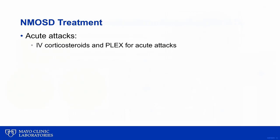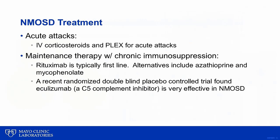Because the attacks are severe, early plasma exchange therapy is often used in addition to IV steroids for acute attacks. These patients need to be on chronic, lifelong immunotherapy to prevent relapse, with rituximab typically being the first-line agent. A recent randomized double-blinded placebo-controlled trial showed eculizumab, a C5 complement inhibitor, led to a significant reduction in relapses, published in the New England Journal of Medicine, and will undoubtedly be used more in the future.